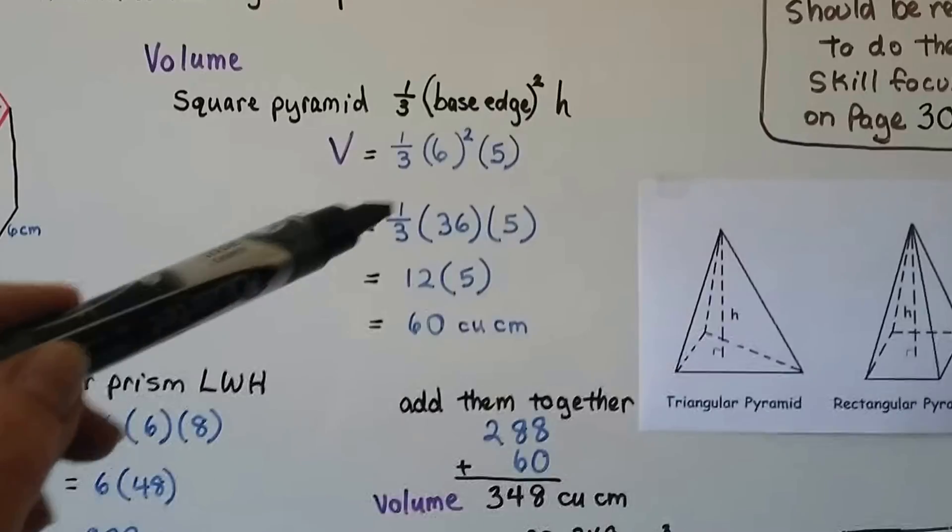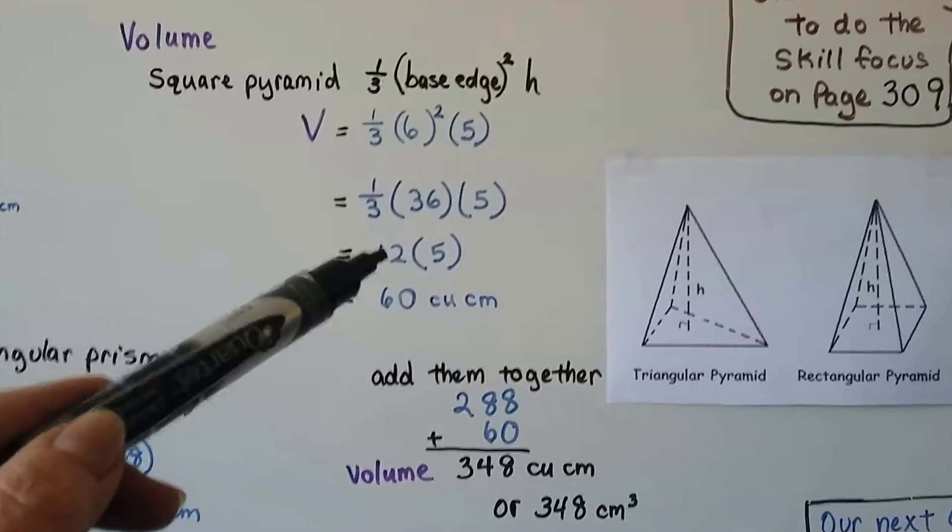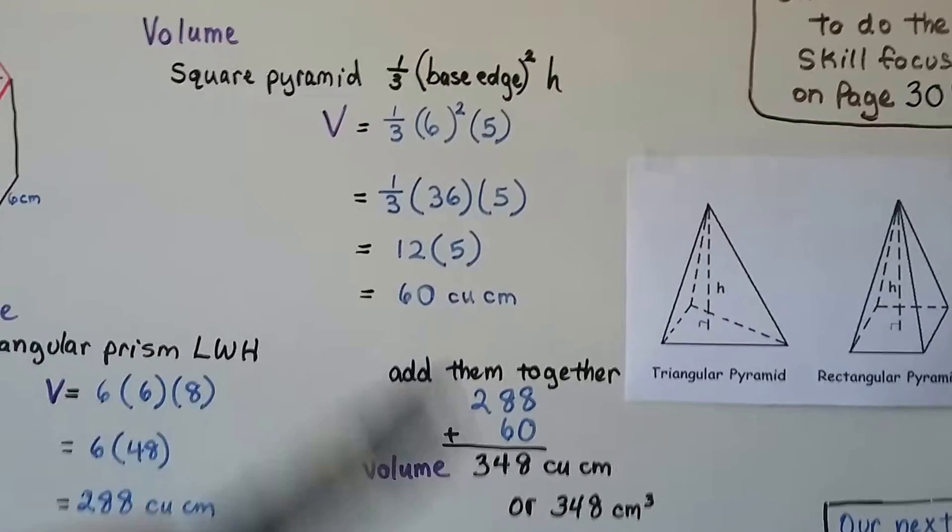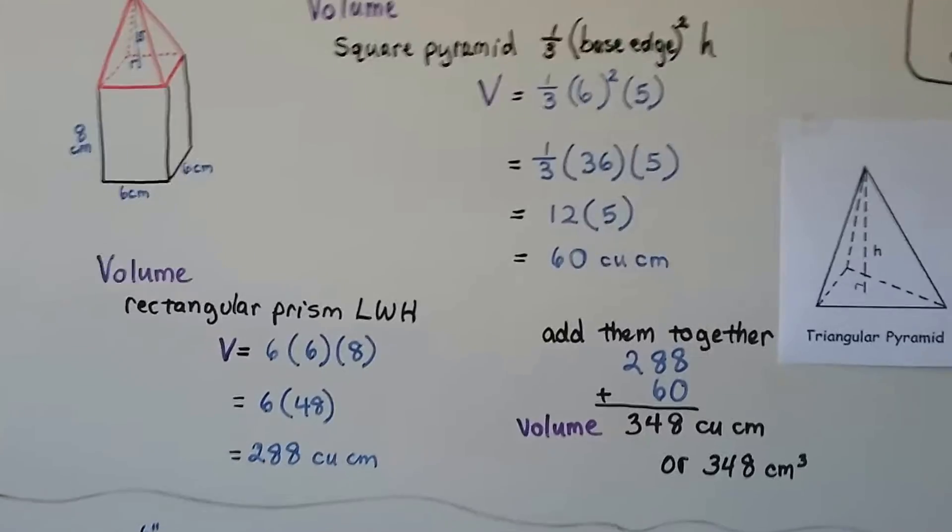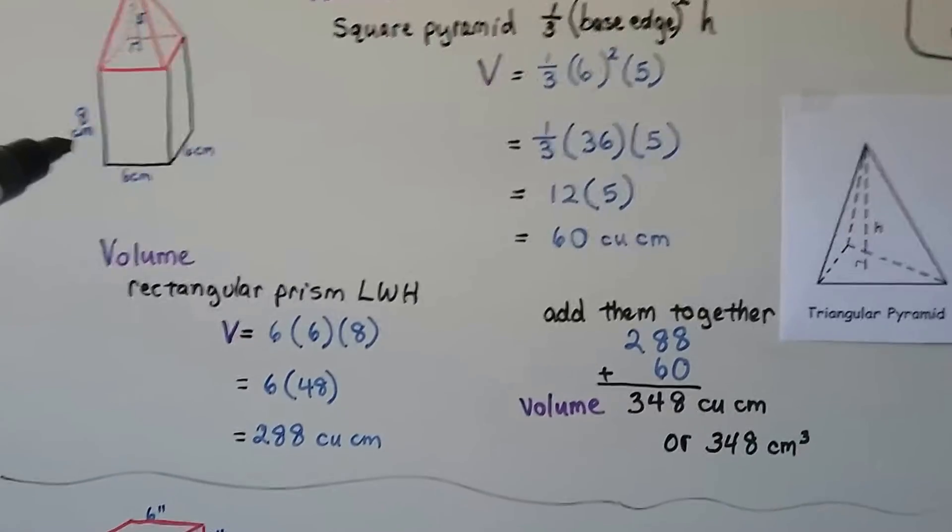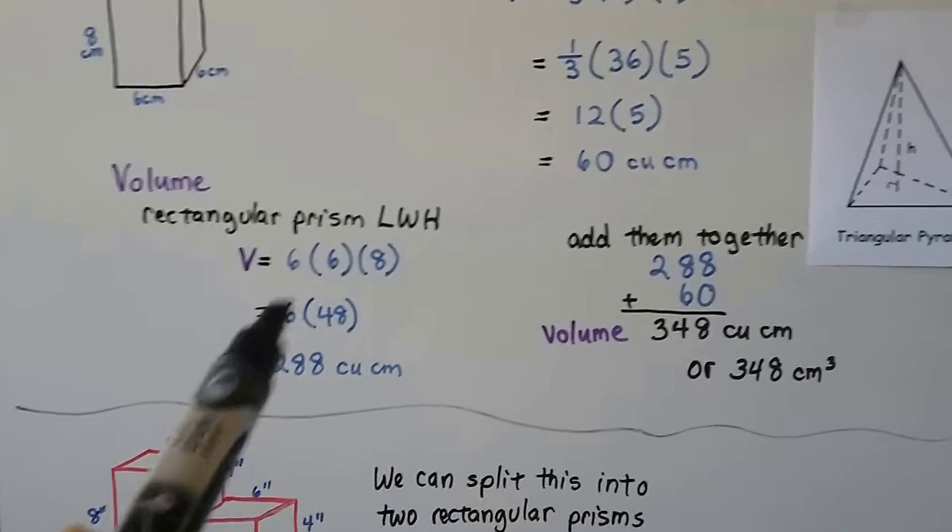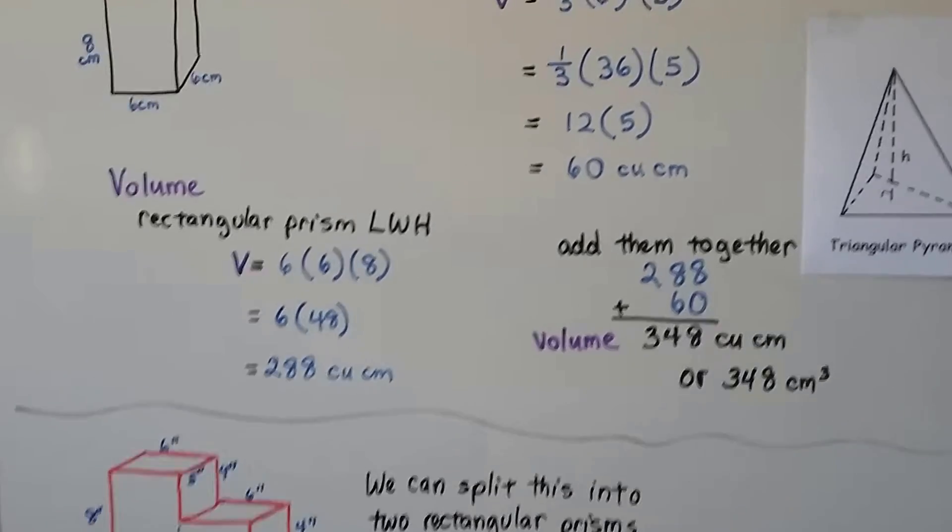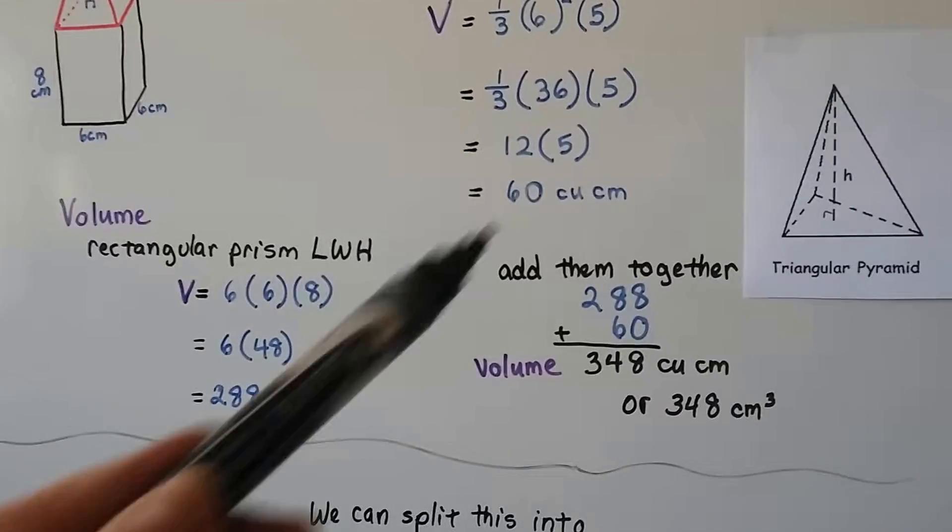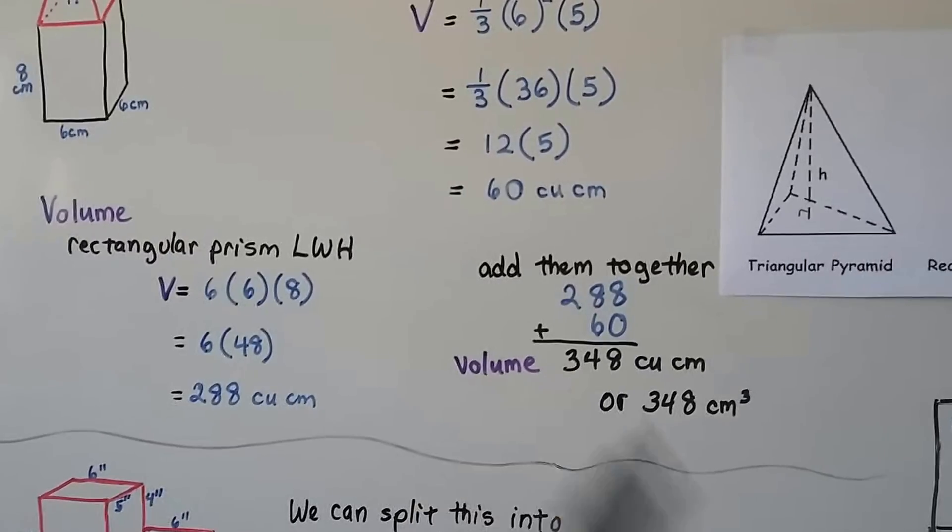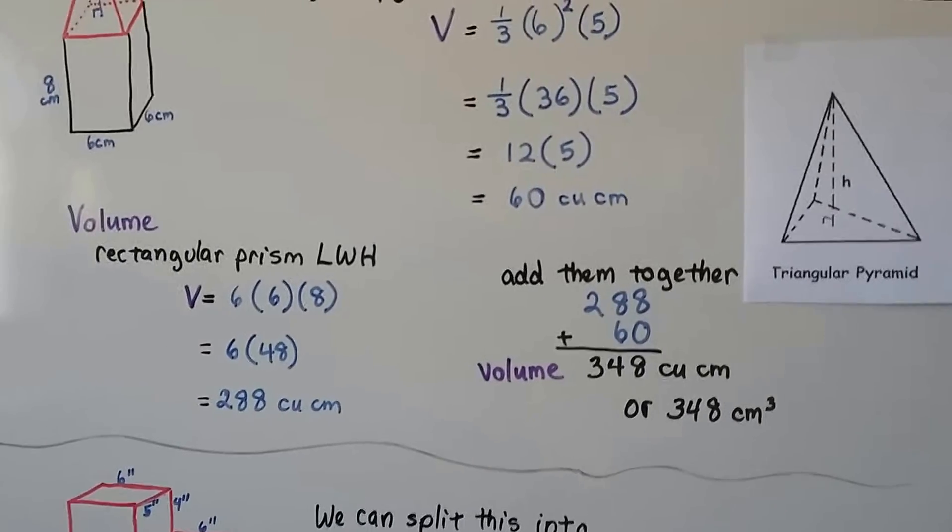So, now we have one-third times 36 times 5. Well, one-third of 36 is 12. And 12 times 5 is 60. Now we have the volume of that pyramid, we need to do the rectangular prism. That's length times width times height. So, that's going to be 6 times 6 times 8. 6 times 8 is 48, and 6 times 48 is 288 cubic centimeters, because this is in centimeters. We add the 60 and the 288, and we get 348 cubic centimeters, or 348 centimeters cubed.